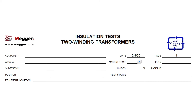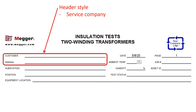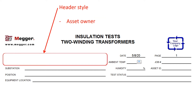This is how the header for a PowerDB form looks like, and it's going to be the same for all of the forms. There are several things that can be customized. The first one is the header style. You can select a service company style where it will show the customer address and the name, or you can select the style of an asset owner where that information is always the same, so no need to repeat or show it there.